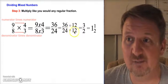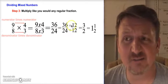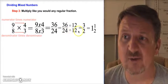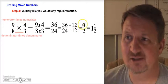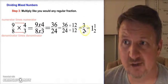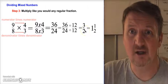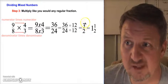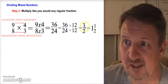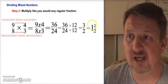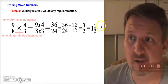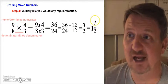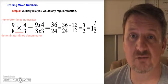The greatest common factor of 36 and 24 is 12. Dividing 36 by 12 gives 3, and dividing 24 by 12 gives 2, so we have three-halves. But it's still an improper fraction, so we simplify one more time: 3 divided by 2 — two goes into three one time with a remainder of 1. That gives us an answer of one and a half.